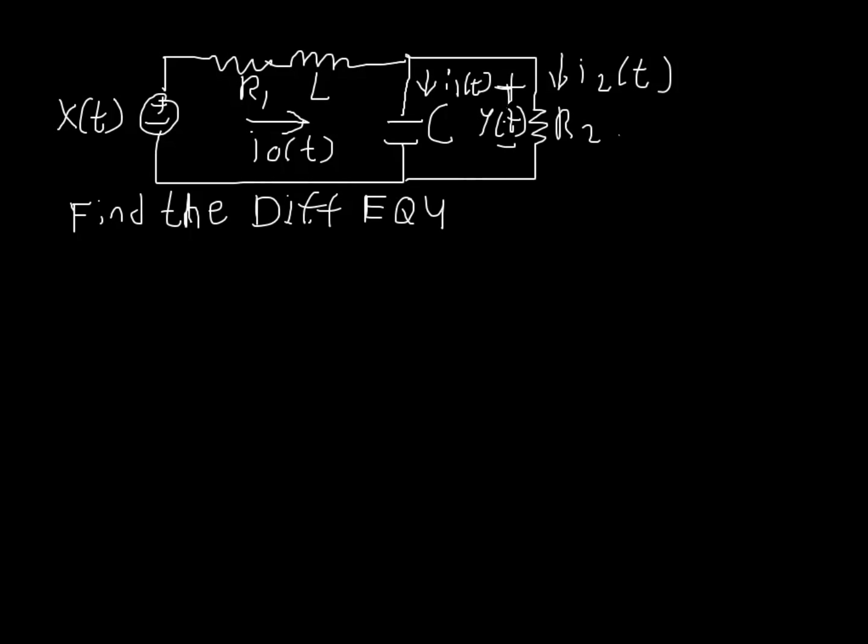So the first thing we would probably want to do is do a KVL around this node right here. So this expression, KVL, so this KVL would be negative x of t because we're coming into the bottom side, plus r1 times i0 of t, and that's from circuits class.